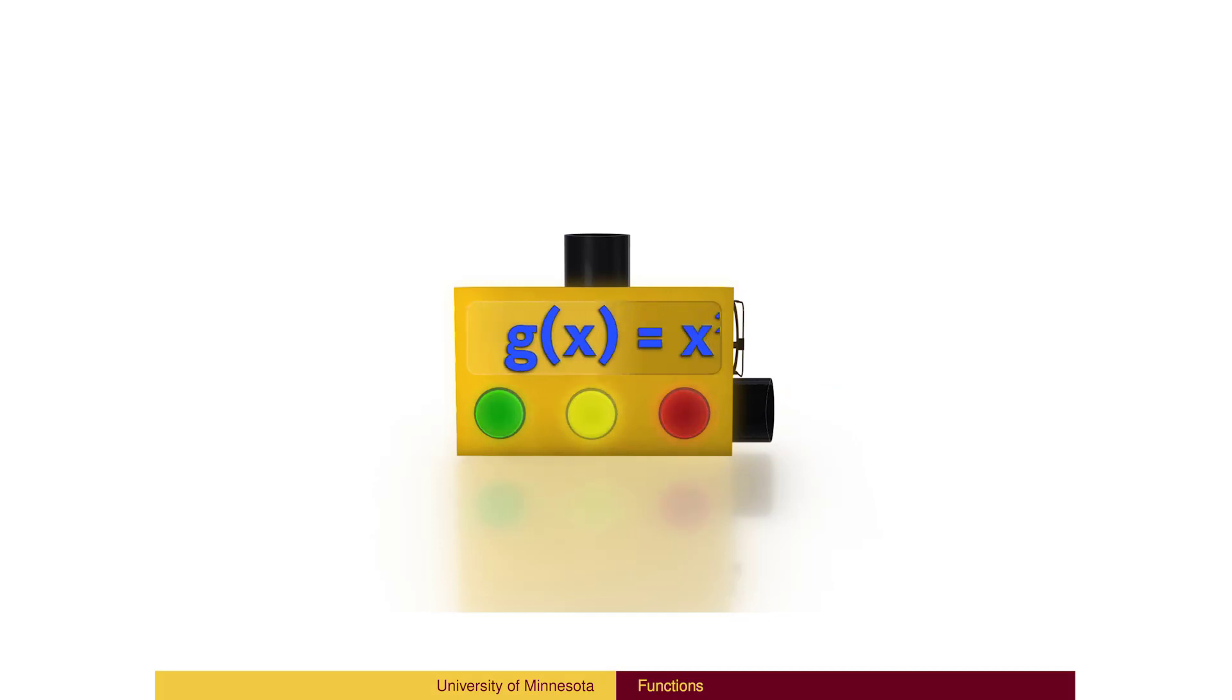Here is another function, called g, which squares the input. If we put in 4, we get the answer 16. If we put in negative 4, we also get the answer 16. It is okay for different inputs to give the same output.